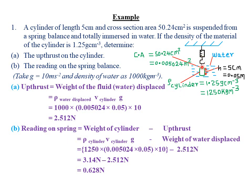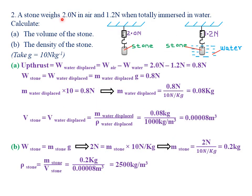Our second example reads that a stone weighs 2.0 newtons in air and 1.2 newtons when totally immersed in water. Calculate part A: the volume of the stone. When the stone is totally immersed in water, the space that stone occupies equals the space left by the displaced water. Whenever a body is totally immersed in a fluid, its volume equals the volume of the fluid that is displaced. So the volume of the stone equals the volume of the water displaced.